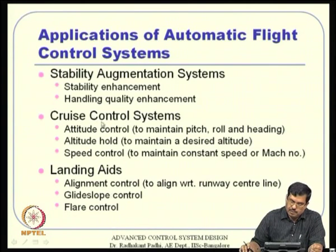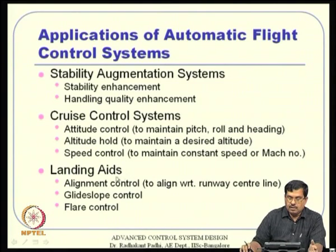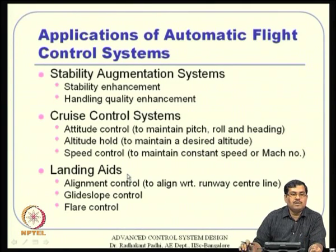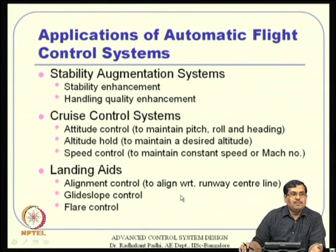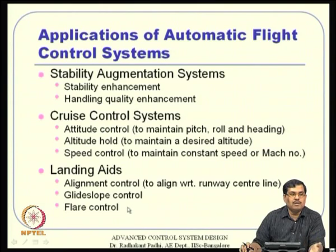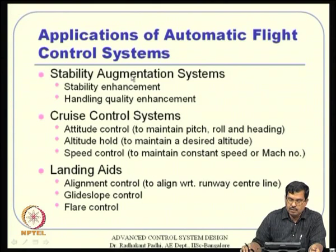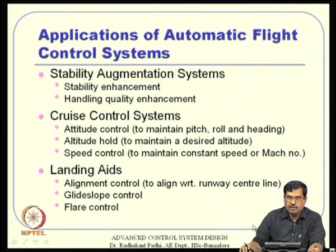Another very important application is automatic path planning and guidance, where optimal control theory plays a very important role. The vehicle should plan its path automatically from point A to B to C to D while avoiding obstacles. In a mission scenario, it must not only find the target but also reach it. There are many important classes of problems for which automatic flight control systems are very useful.